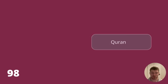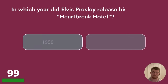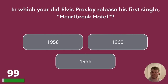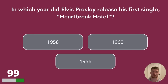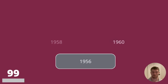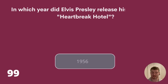Question 99. In which year did Elvis Presley release his first single, Heartbreak Hotel? 1958, 1960, or 1956? The answer is 1956.